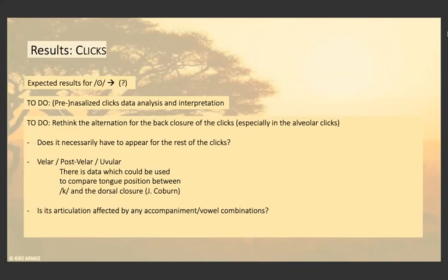There is a point where I would love to hear your thoughts, because I am really unsure about the back closure of the clicks, especially in the alveolar clicks but also in the rest — I don't know if it necessarily has to appear, or at least not in a phonemic status. I'm also unsure about the place of articulation — whether it's velar, post-velar, or uvular. Richard actually sent an email and I received a lot of promising answers, with data that could be used to compare the composition between the stop and the dorsal closure, so we could maybe see if it's actually velar or not. I would like to see if its articulation is affected by any accompaniment or vowel combination, which might shed light on whether it's phonemic or phonetic.